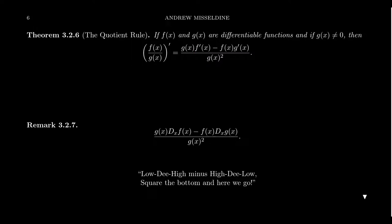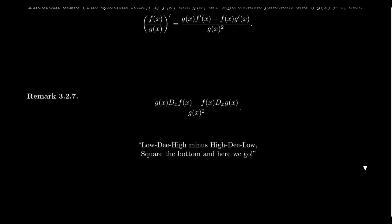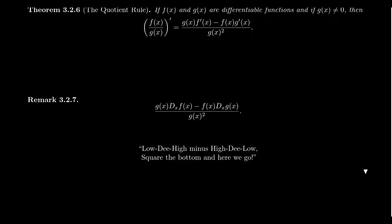One way of remembering the order is: whoever was on top — the numerator — you take the derivative of it first, then whoever is on the denominator you take the derivative of that. Another way is to think of the following poem, because even after teaching calculus for many years I still use the poem I learned in my first calculus course. We write the rule using d to mean derivative: g of x times d of f of x, minus f of x times d of g of x.